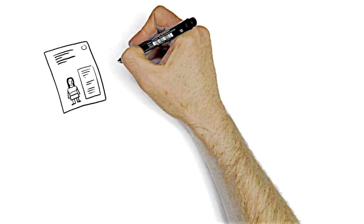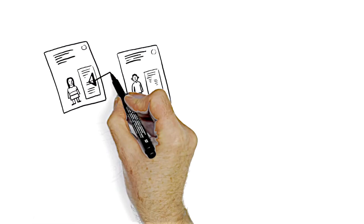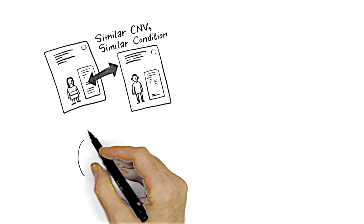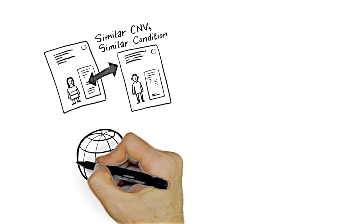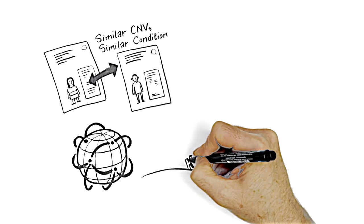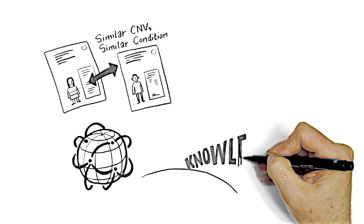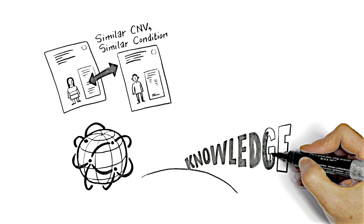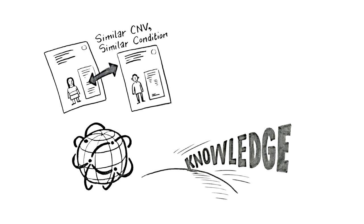We are constantly learning more and looking out for patterns in children with similar CNVs and conditions. The database that maps variations in genes to symptoms and diseases is a work in progress. Our knowledge is expanding, but not complete.